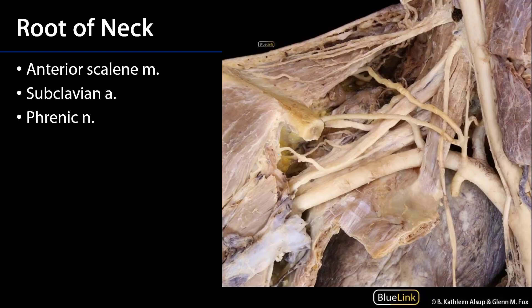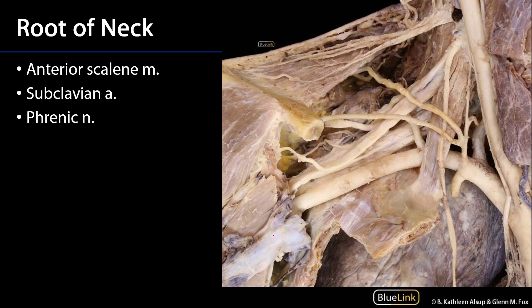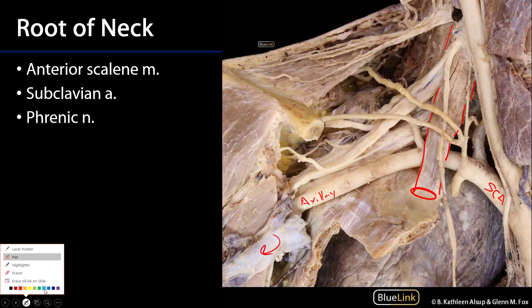Moving deeper, with the subclavian vein reflected away, we can see the subclavian artery. Over here would be the axillary artery — we'll talk about that transitional point. Probably the most important structure to the root of the neck is the anterior scalene muscle. The anterior scalene muscle attaches to the transverse processes of cervical vertebrae down to the scalene tubercle of rib 1. Just anterior to that, we have the groove for the subclavian vein.